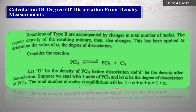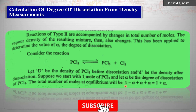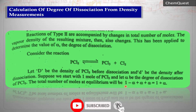We suppose we start with one mole of PCl₅, where alpha is the degree of dissociation. At equilibrium, moles of PCl₅ = (1 − α), moles of PCl₃ = α, and moles of Cl₂ = α. So total moles at equilibrium = (1 − α) + α + α = 1 + α.